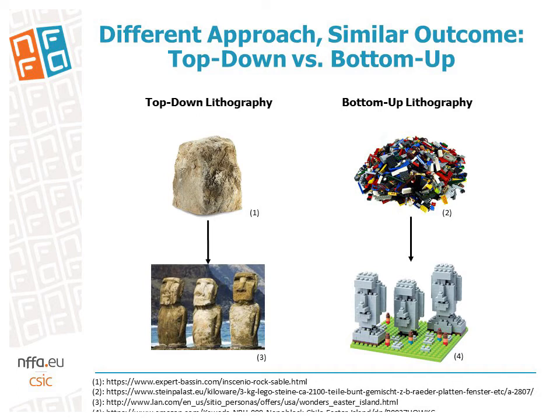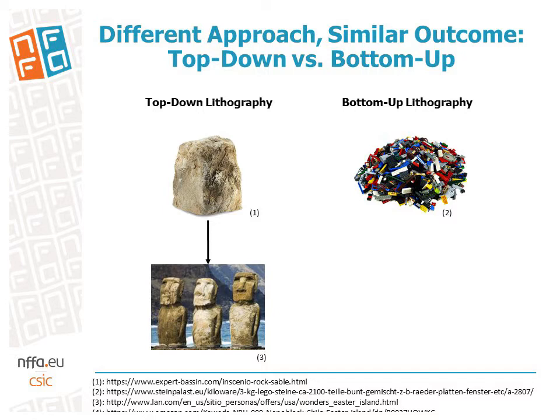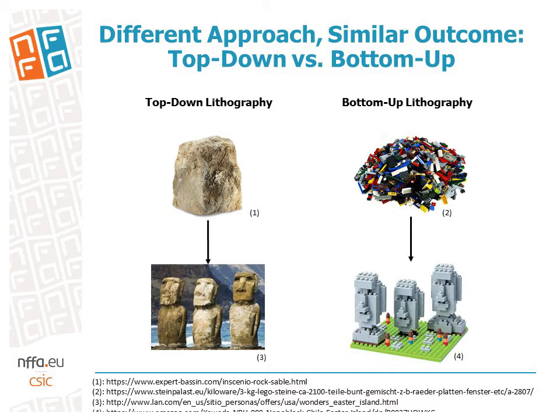Lithography techniques can be subdivided into two different groups: top-down and bottom-up lithography. Top-down lithography is an approach that removes parts of a substrate to form structures, as the builders of the famous Easter Island figures have done, while in bottom-up lithography nanostructures are formed out of smaller building blocks, similar to what has happened to this pile of toy bricks. Although the two approaches are fundamentally different, they may yield very similar results.